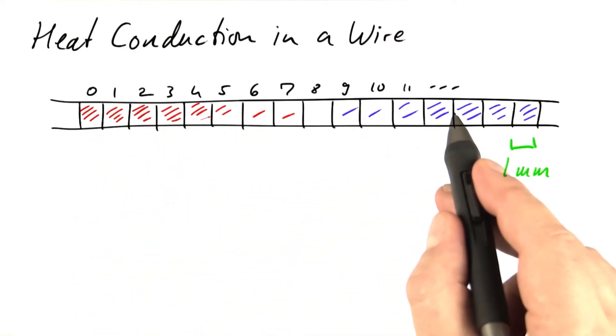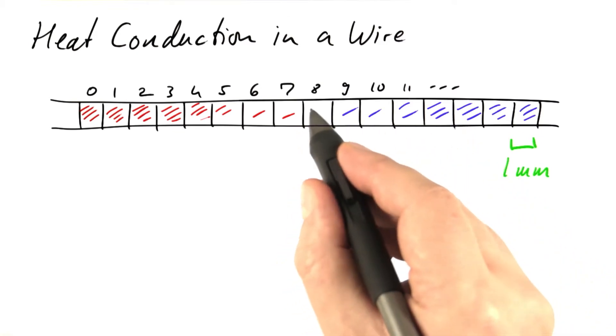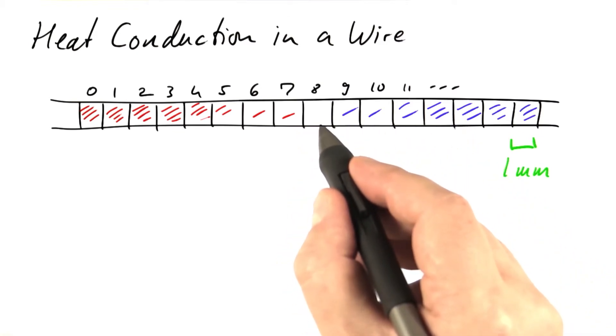Every single compartment is treated in the same way, so we can just look at one single one to get an idea of what's happening. Let's take number eight.